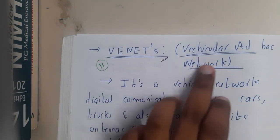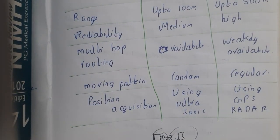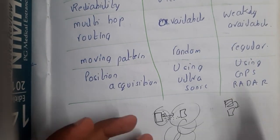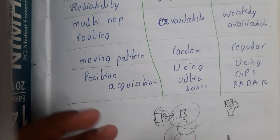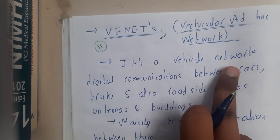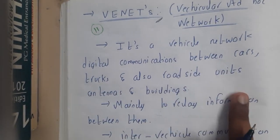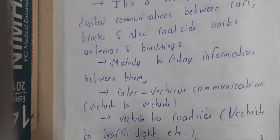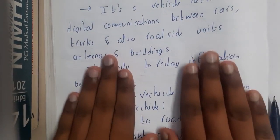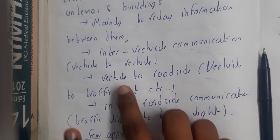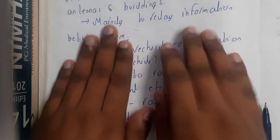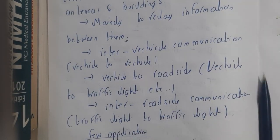This concept is nothing but the Vehicular Ad Hoc Network. Tesla cars can move without traffic issues because one Tesla car can indirectly influence the next Tesla car — they are aware of each other when beside one another. VANETs are a vehicular network for digital communication between cars, trucks, and roadside units to relay information between them. Inter-vehicular communication is one car communicating with another. Vehicle-to-roadside communication means your vehicle communicating with a road sign, such as a traffic light that adapts based on traffic on that road.